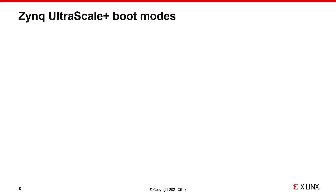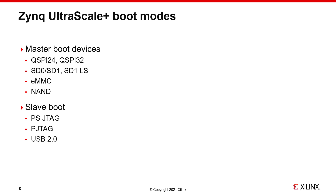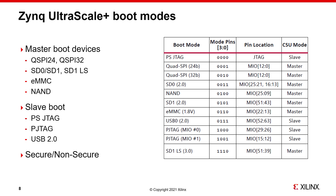The CSU boot ROM can boot the system from QuadSPI using 24 or 32-bit addressing, SD0 and SD1 for SD2.0, and SD1 with an SD3.0 compliant voltage level shifter, EMMC, or NAND external boot devices in master mode. QuadSPI is the only boot mode that supports execute in place. Slave boot is supported for PSJTAG, PJTAG, and USB 2.0. There are two JTAG port interfaces: PSJTAG, which can reach all TAP controllers on the chain, and PJTAG, which provides exclusive access to the ARM DAP controller. All modes can be non-secure; modes that can be secure and signed are all except PSJTAG and PJTAG. This table from the Zynq Ultrascale Plus Technical Reference Manual shows more detail for the boot modes.